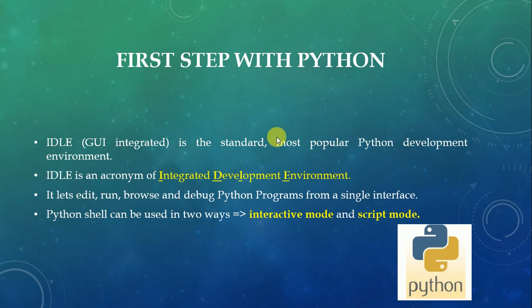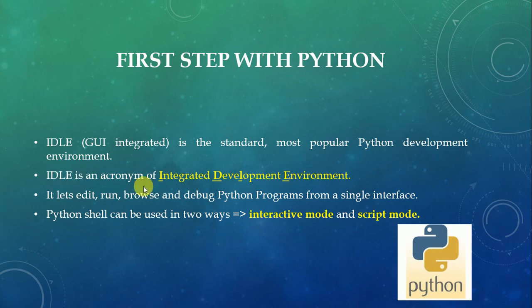Now, the first step with Python. For writing a Python program, we require a graphical user interface — a GUI. That GUI is known as IDLE. IDLE is an acronym for Integrated Development Environment. It is mainly used for editing, running, debugging, and browsing the programming language. There are two types of Python shells available: interactive mode and script mode.